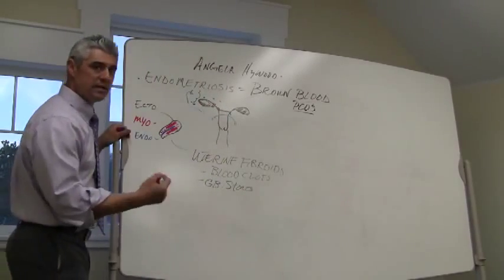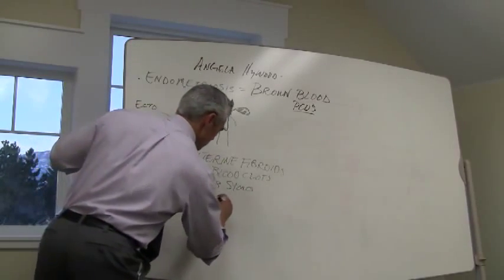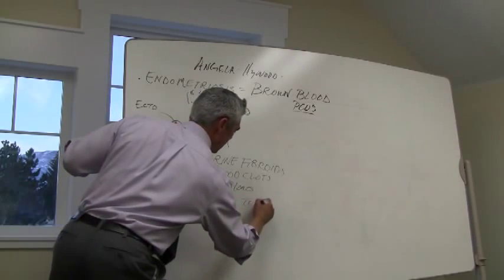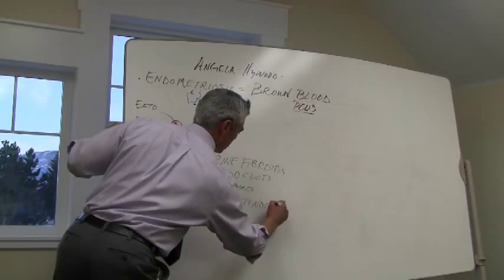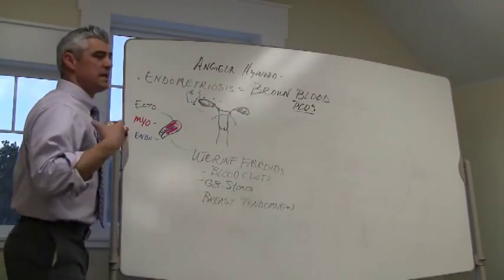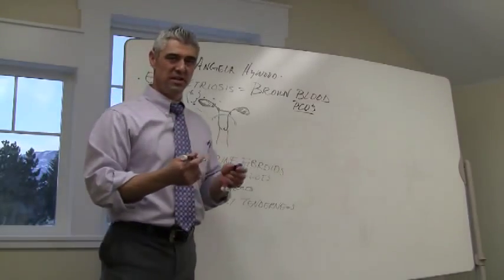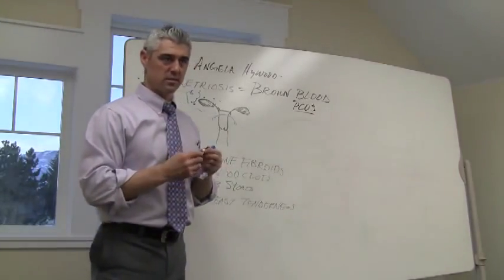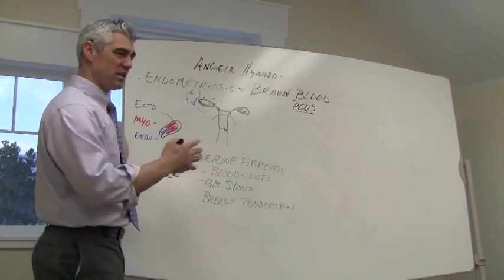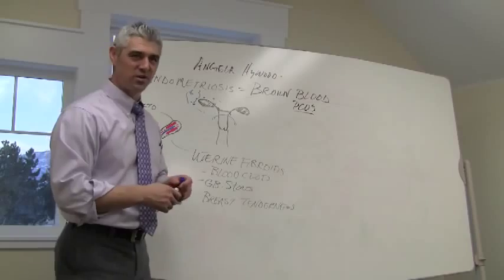We'll see uterine fibroids, blood clots, and then we see gallbladder stones and gallbladder attacks and then breast tenderness any time after or during ovulation. So it can be ovulation to any time during the week before my period. So sometimes we'll see that as the PMS premenstrual syndromes. So you can see how it can become a little more complicated or complex.